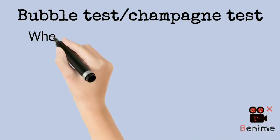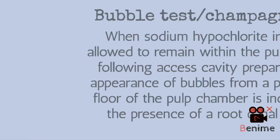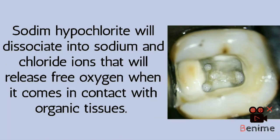Our next test is the champagne bubble test. This method helps to pinpoint the particular orifice of a hidden canal. After access cavity preparation, the chamber is flooded with sodium hypochlorite. Allow the irrigant to remain in the pulp chamber. You will witness bubbles from a particular point on the floor of the pulp chamber, indicating there is a hidden canal. The logic behind this test is that sodium hypochlorite dissociates into sodium and chlorine ions and releases free oxygen when it comes in contact with pulp, which is organic tissue.